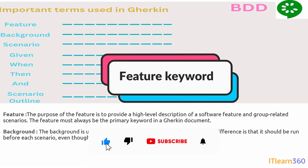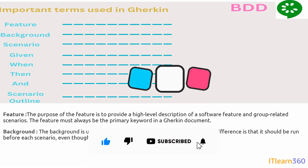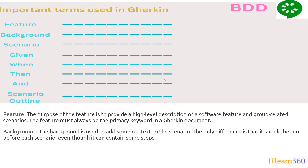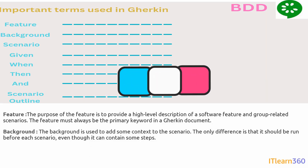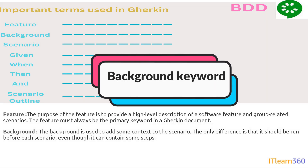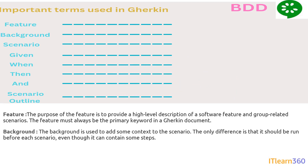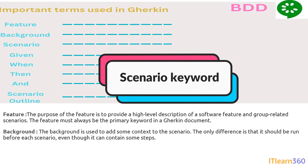The Feature keyword describes a descriptive message that defines our test cases. The Background keyword adds context to the scenario — if you want to add some descriptive messages to a scenario, we use the Background part. The Scenario is the core part of the Gherkin structure.